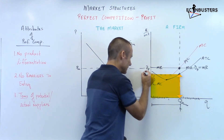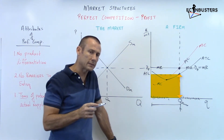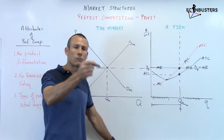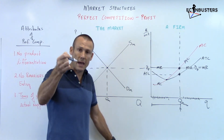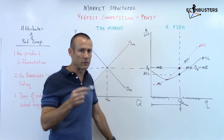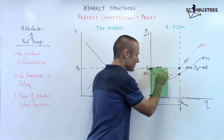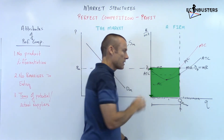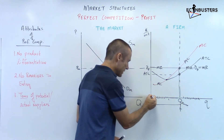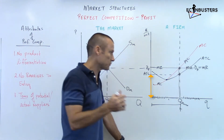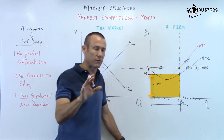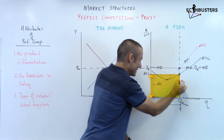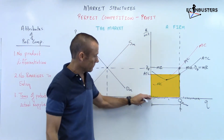If the firm's price is above the average total cost, they're making a profit. Price is per-unit revenue — if per-unit revenue for every unit produced is greater than average total cost for all those units, you're making a profit. Price times quantity gives you total revenue — that's the big box. ATC times that same quantity gives you total cost — that's the smaller red box.